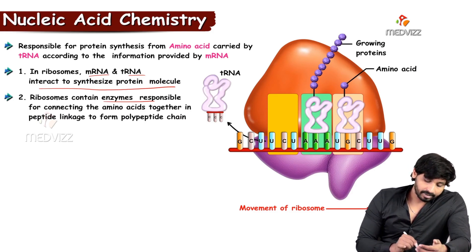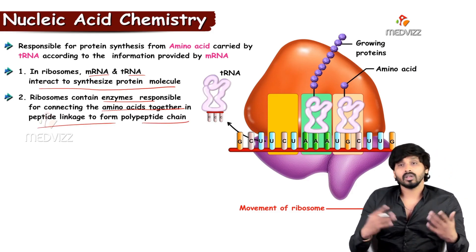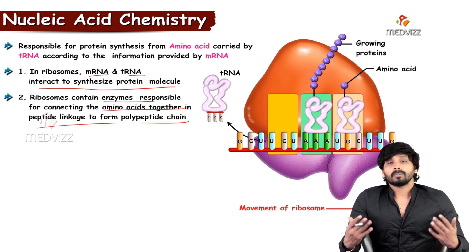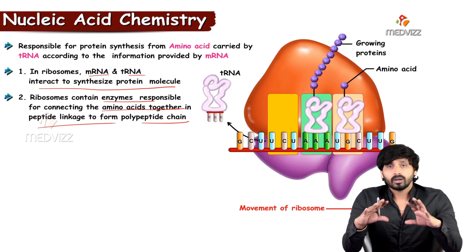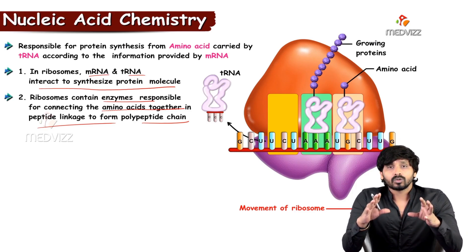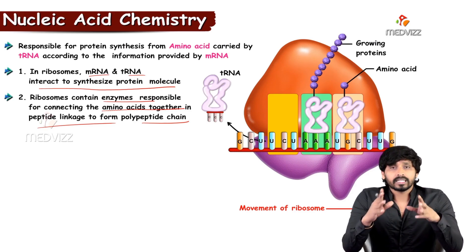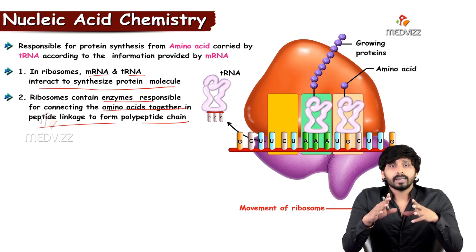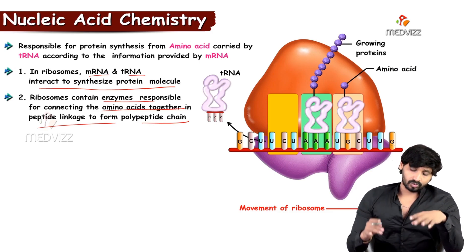Ribosomes contain enzymes responsible for connecting amino acids together in peptide linkage, because peptides and proteins are formed through peptide linkage. The enzymes required for making that linkage are present in the ribosomes.